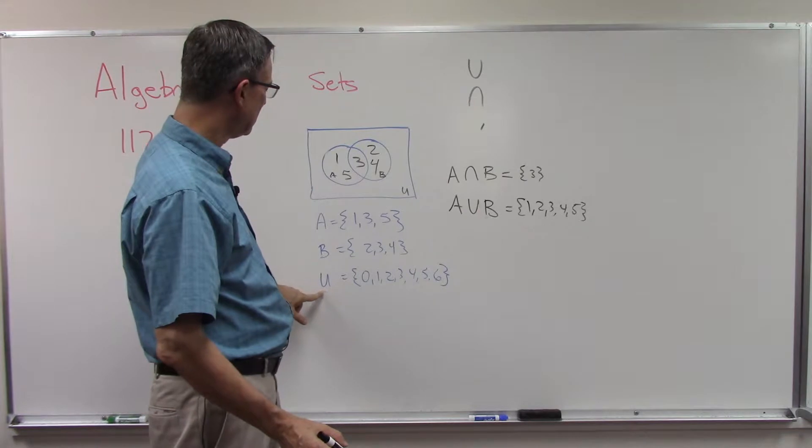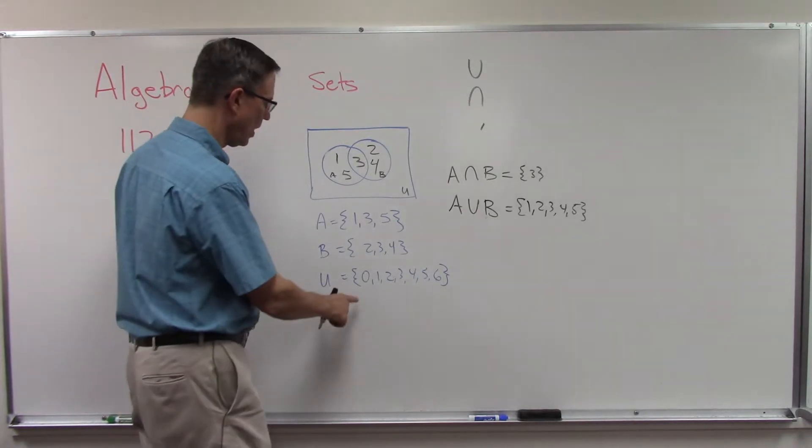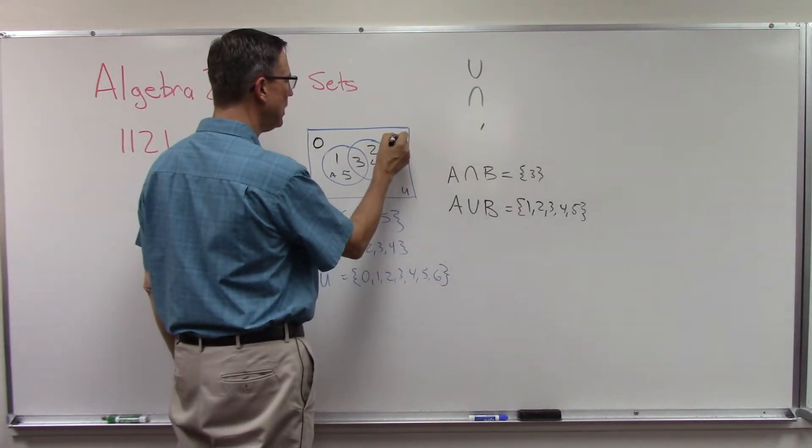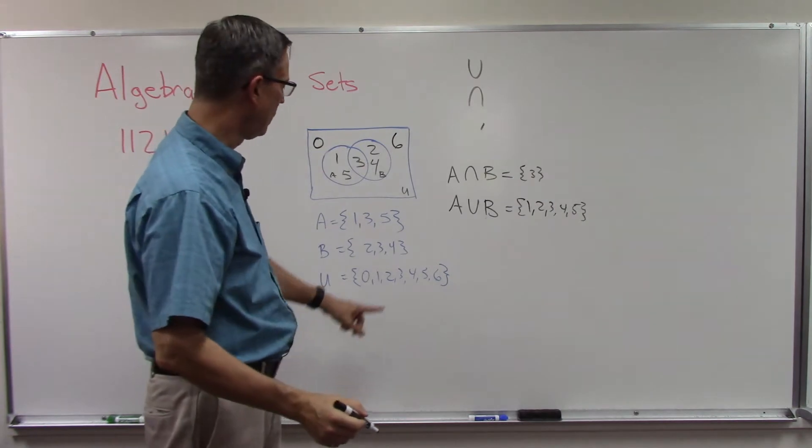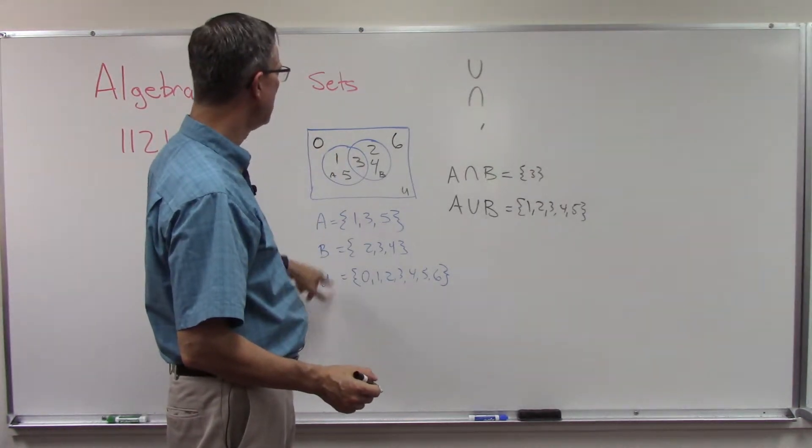Now notice in this, the universal set, we also have zero one two three four five and we have the number six. We have zero and six that are part of set U but are not in set A or B, alright.